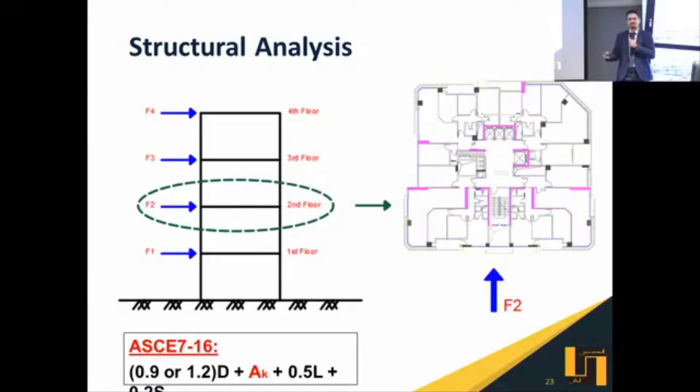As for the combination, as mentioned earlier by Dr. Michelle, the ASCE provides us with a combination to design and combine the blast effect, which is 0.9 or 1.2 times dead load plus the accidental blast. By the way, this is highly recommended to be increased by 20% due to uncertainty and reflections, plus 0.5 live load, plus 0.2 snow load. This is the design combination to be considered in our work as designers.